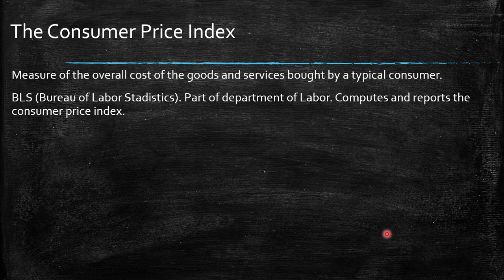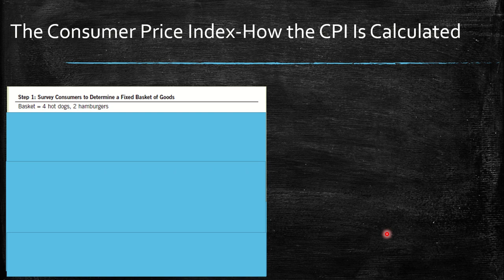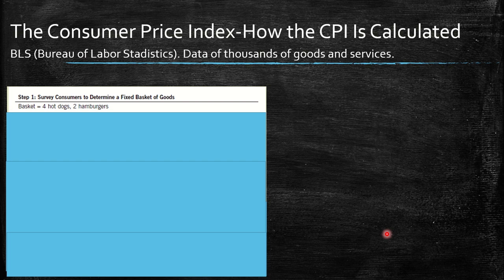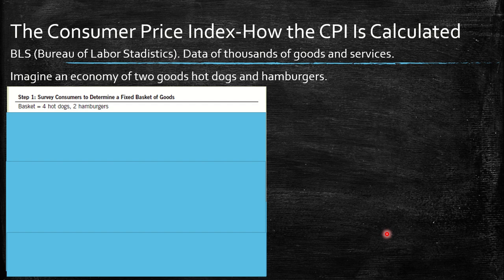Here is a numerical example. We're going to create a CPI for a specific basket of goods. To simplify, we imagine an economy of just two goods. We fix the quantity of goods in the basket: four hot dogs and two hamburgers — the normal consumption for a typical consumer. In reality, the Bureau of Labor Statistics tracks thousands of goods and services.